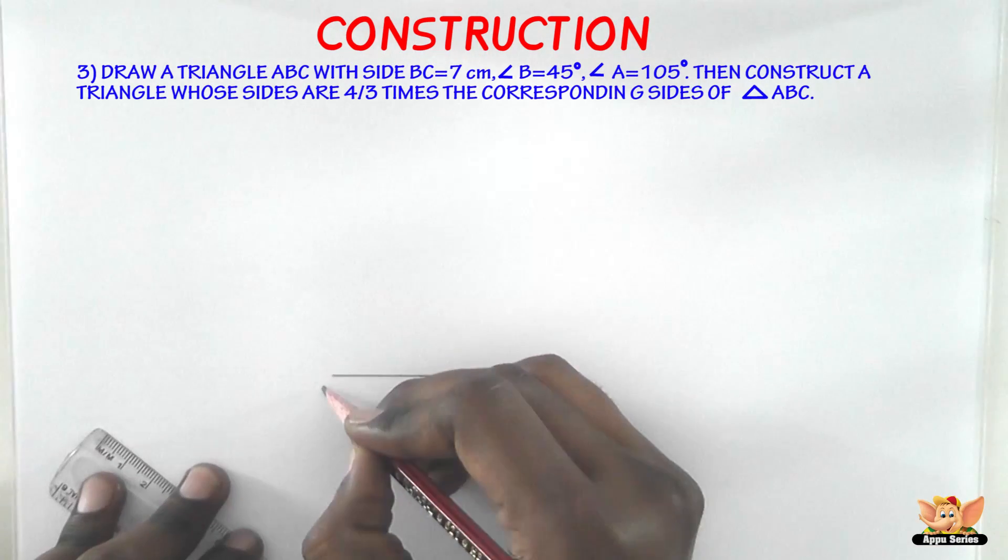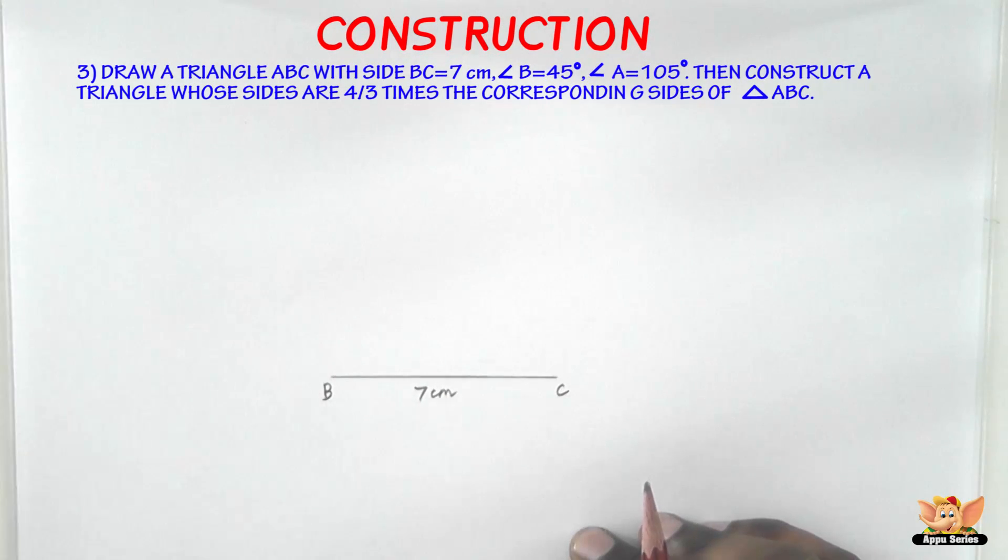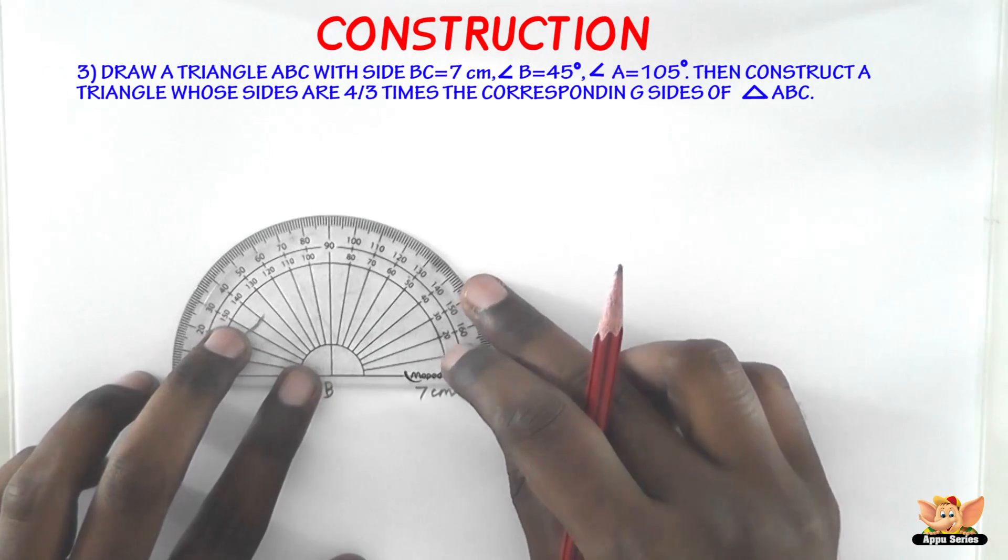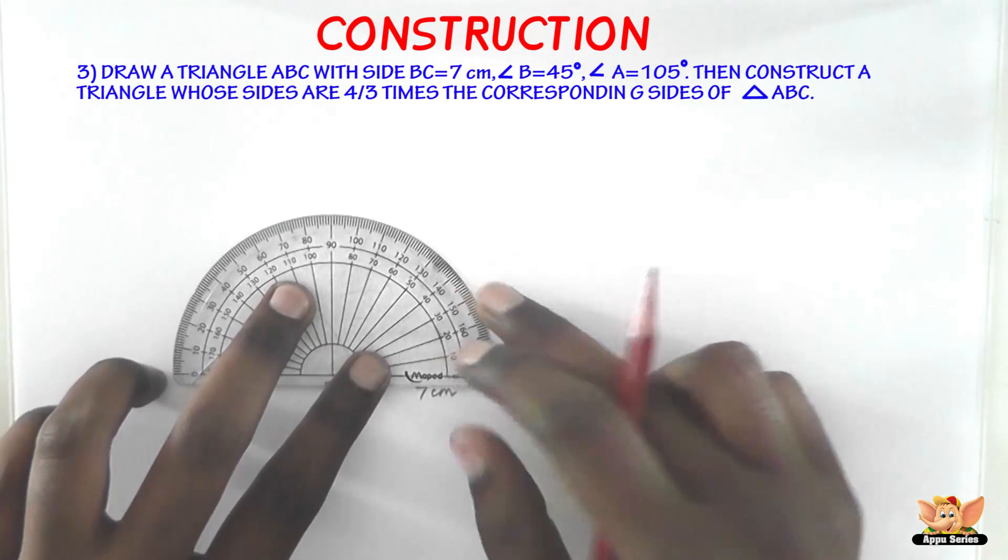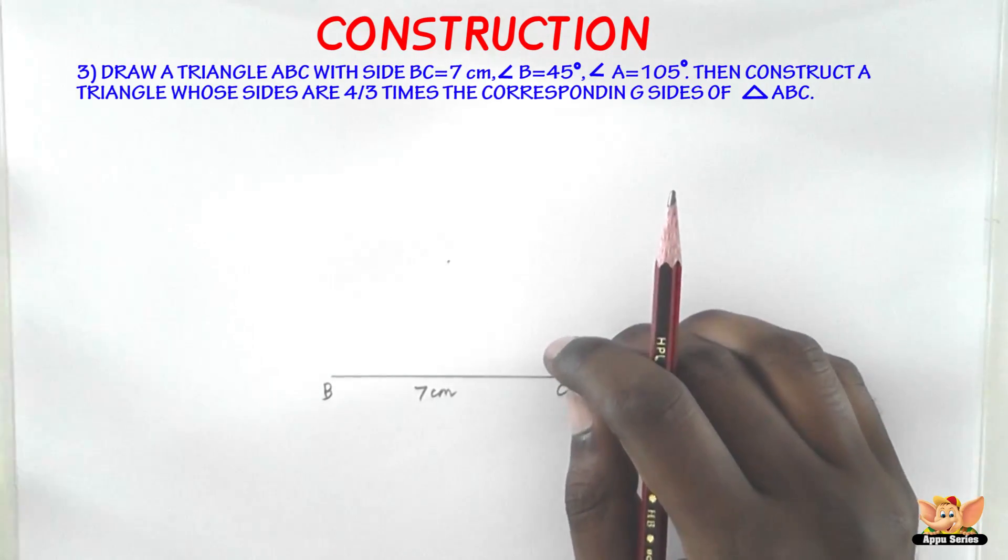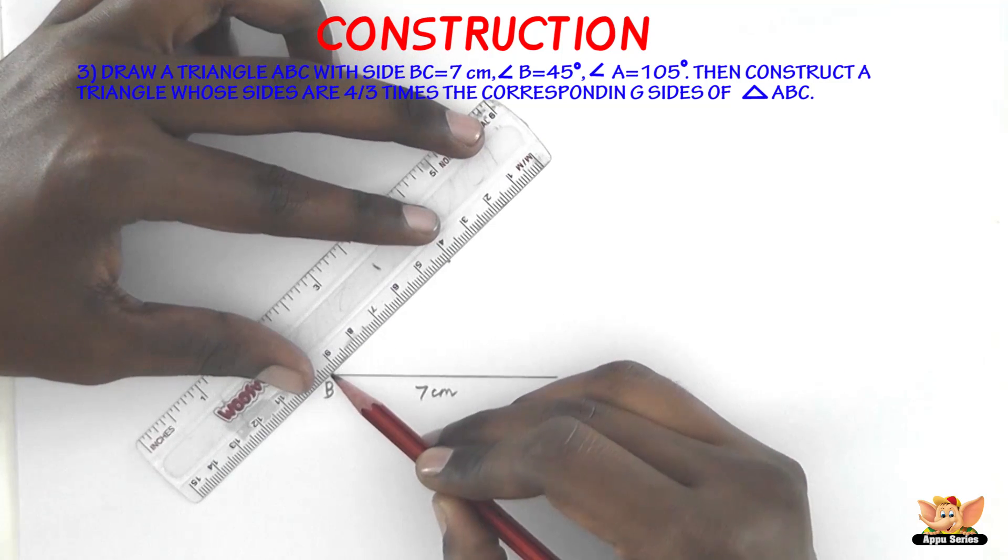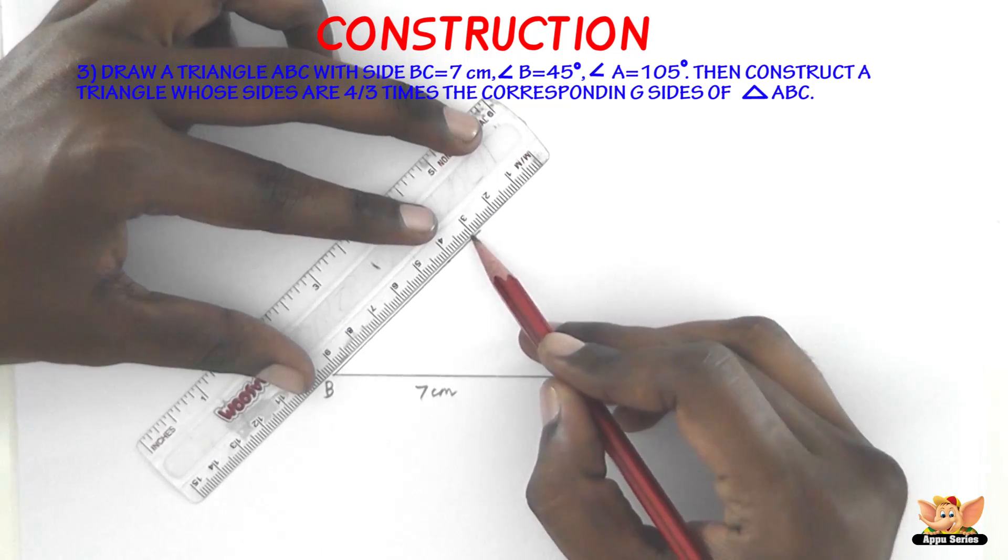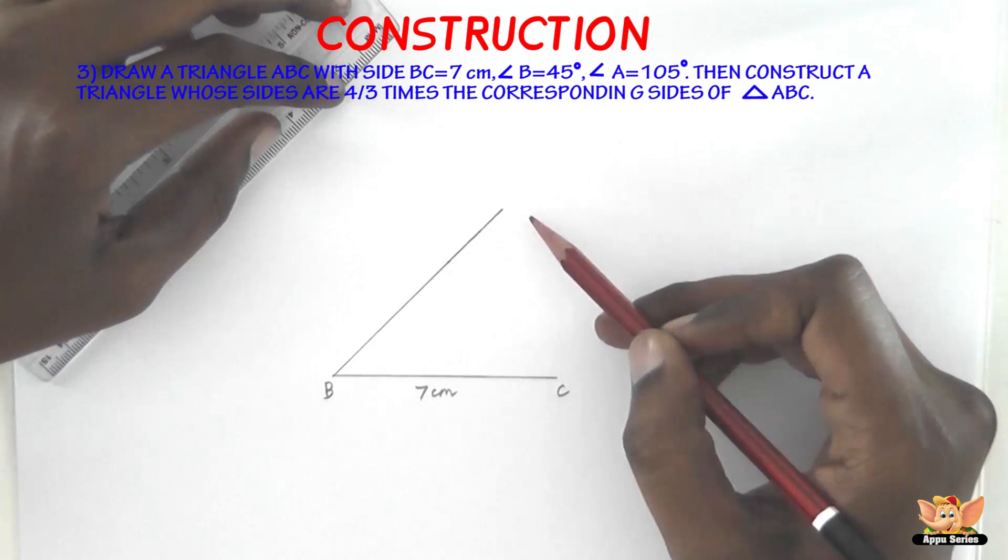We've got only one side, the data is BC equals 7 cm. And then we have angle B as 45 degrees. So we can use a protractor and draw the angle 45 degrees. So 45 is exactly here. So now join the point B to that point which we marked as 45 degrees on the protractor. So somewhere here is going to be A.